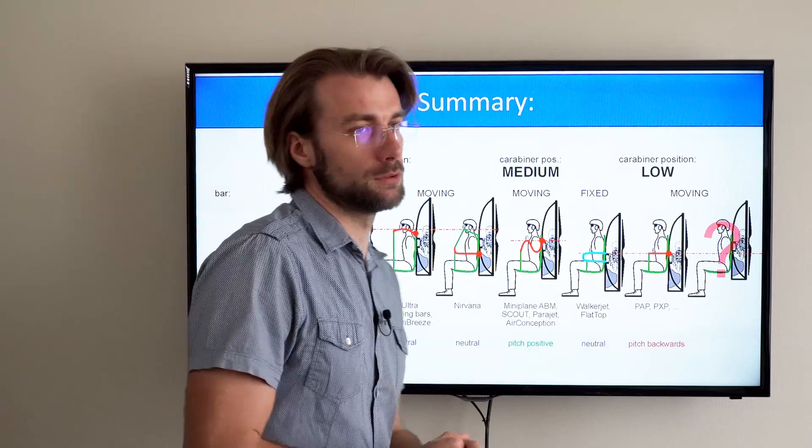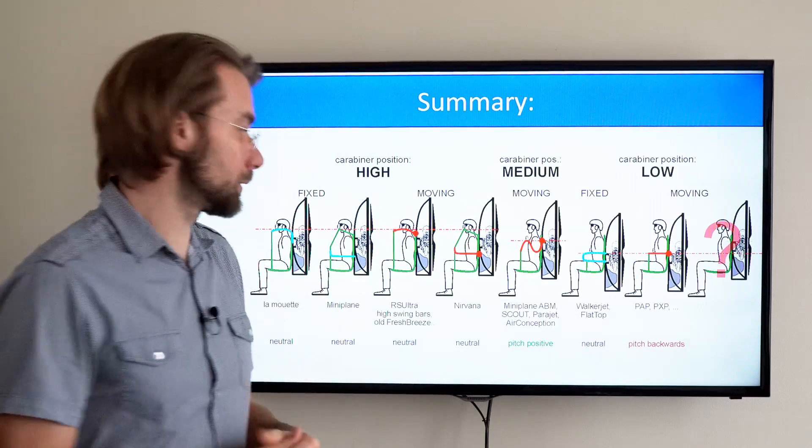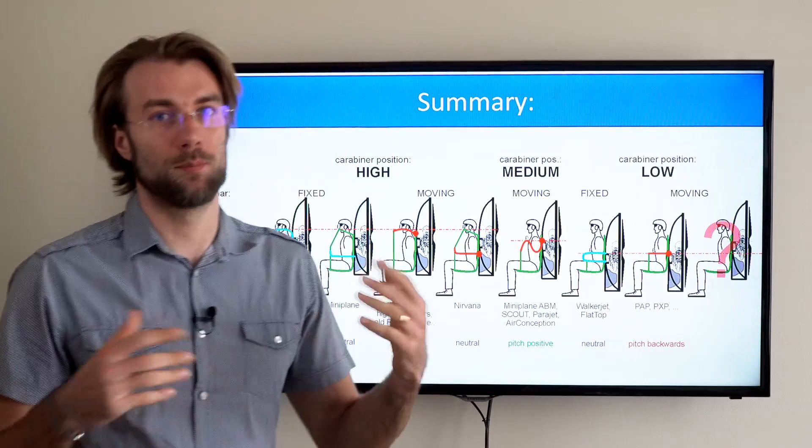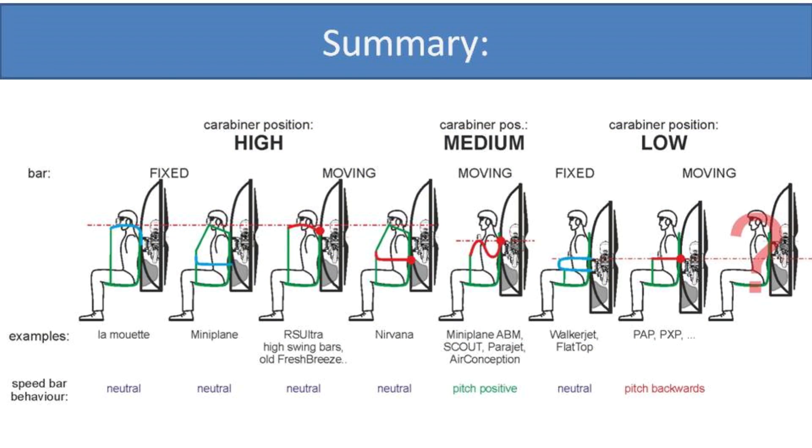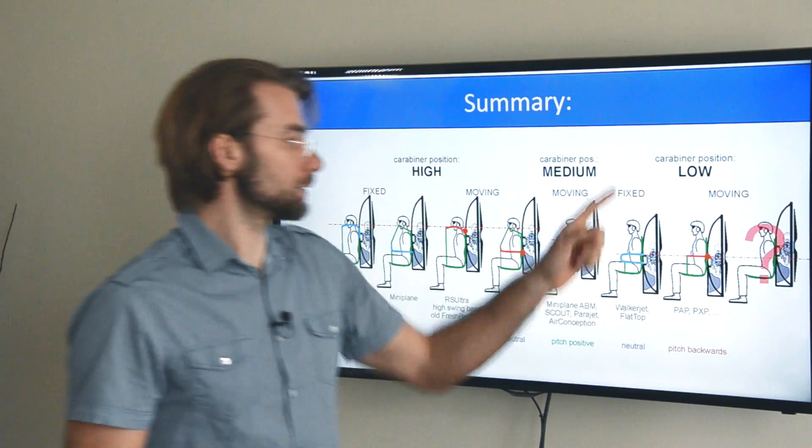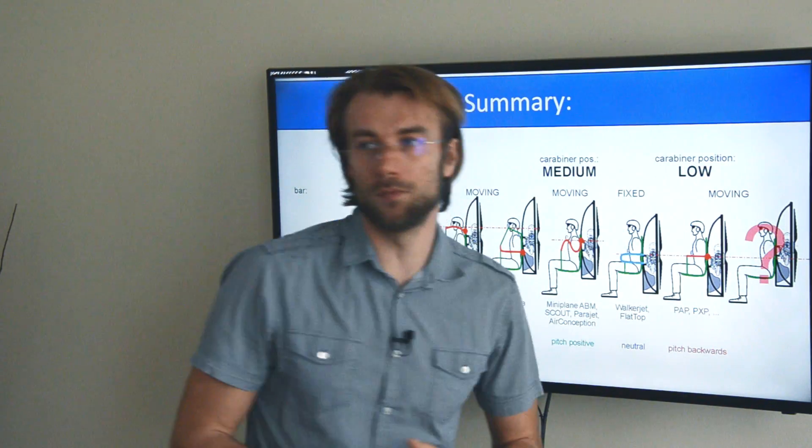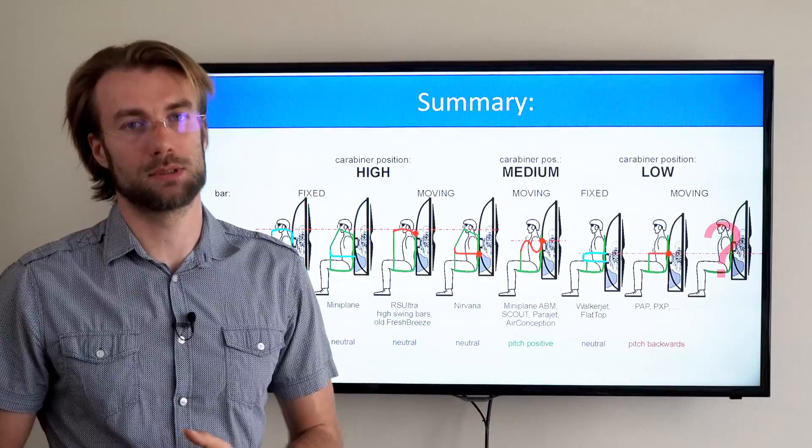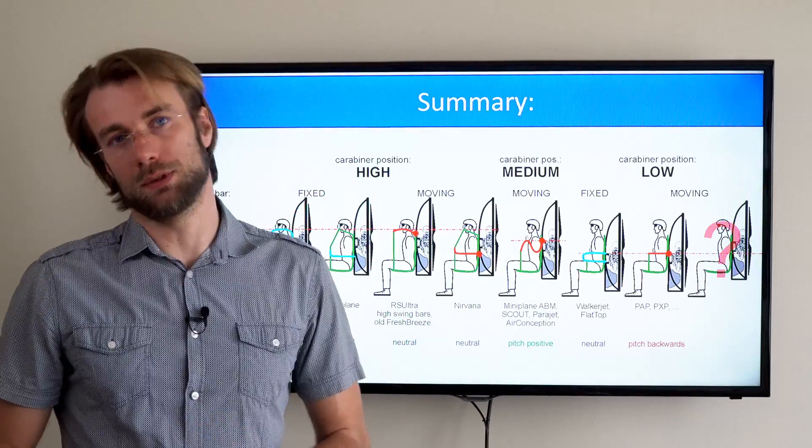Medium suspension system, the gooseneck bars, are actually pitch positive. Low suspension system with the fixed bar is neutral because harness does not change the geometry. Low suspension system with the moving bars will pitch backwards which is an unwanted behavior.